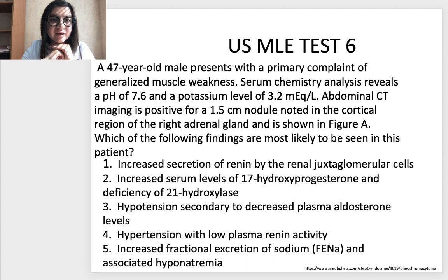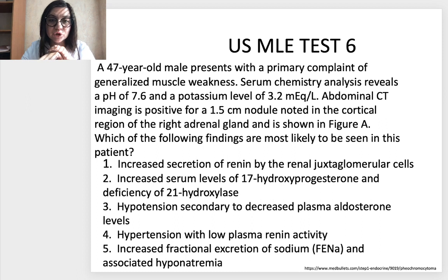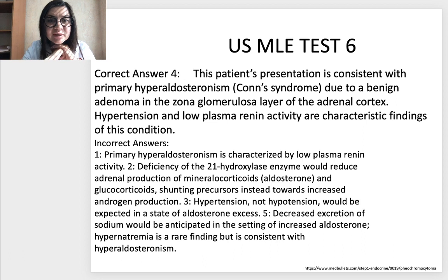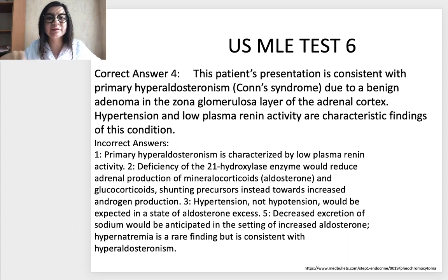Question 6. A 47-year-old male presents with a primary complaint of generalized muscle weakness. Serum chemistry reveals a pH of 7.6 and potassium 3.2. Abdominal CT imaging is positive for a 1.5 cm nodule in the cortical region of the right adrenal gland. Which of the following findings are most likely to be seen in this patient? The correct answer is 4. This presentation is consistent with primary hyperaldosteronism — Conn's syndrome — due to a benign adenoma in the zona glomerulosa of the adrenal cortex. Hypertension and low plasma renin activity are characteristic findings.